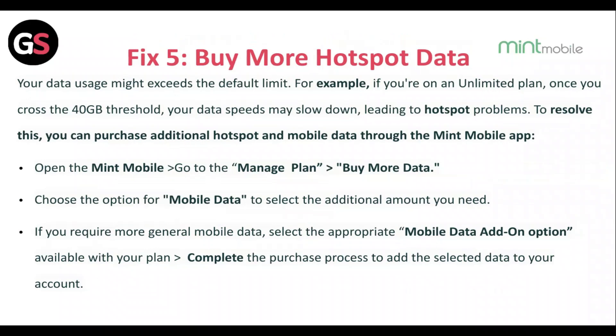Fix 5: Buy more hotspot data. Your data usage might exceed the default limit. For example, if you are on an unlimited plan, once you cross the 40 GB threshold, your data speeds may slow down, leading to hotspot problems. To resolve this, you can purchase additional hotspot and mobile data through the Mint app. Open Mint Mobile, go to Manage Plan, then Buy More Data. Choose the option for mobile data to select the additional amount you need, and select the appropriate mobile data add-on option available with your plan.